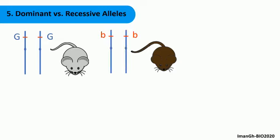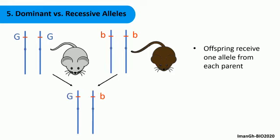As you already know, their offspring receive one allele from each parent. It will receive the G allele from the first parent and B allele from the second. So its genotype is GB.